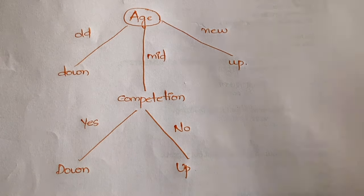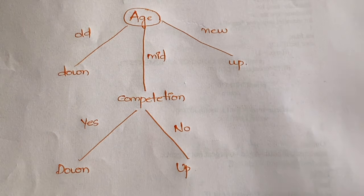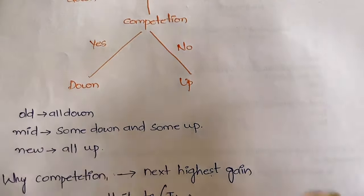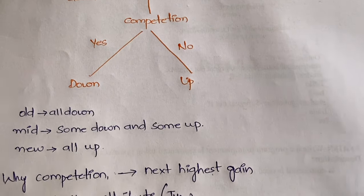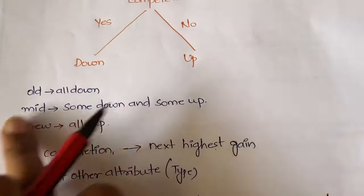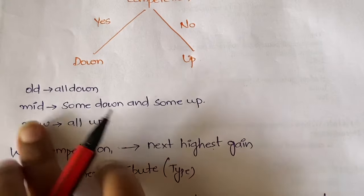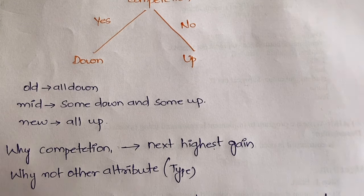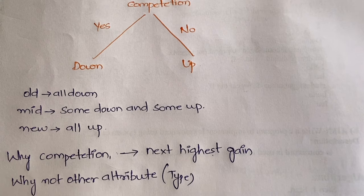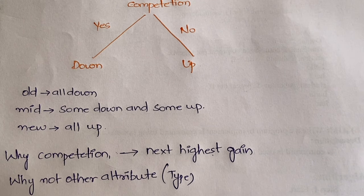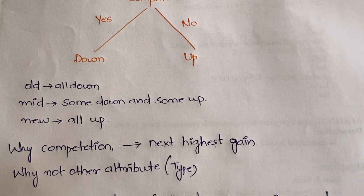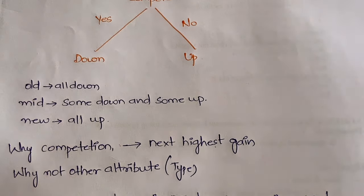Very simple—we are done with the classification. I have theoretically explained that all old are down, mid has some down and some up and they are classified based on competition, and new are all up. Why competition? Why not other attributes like type?